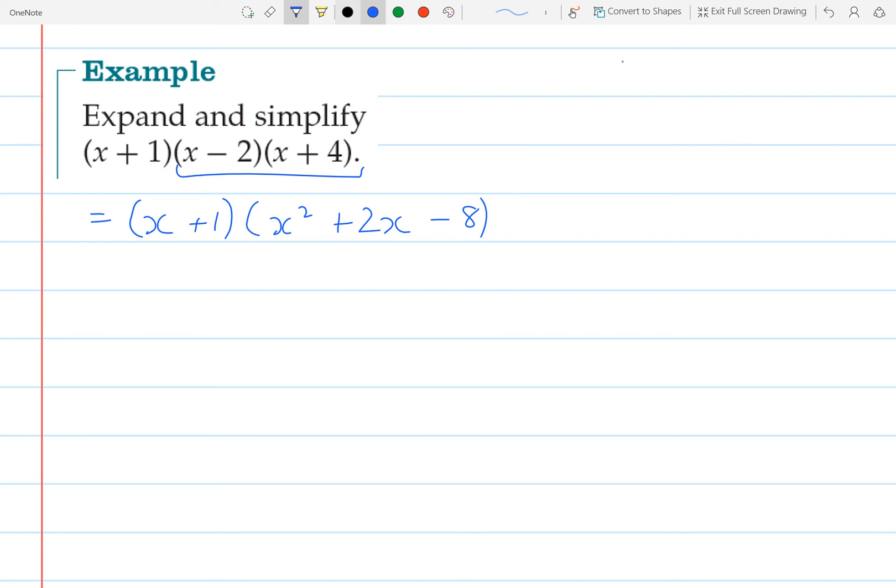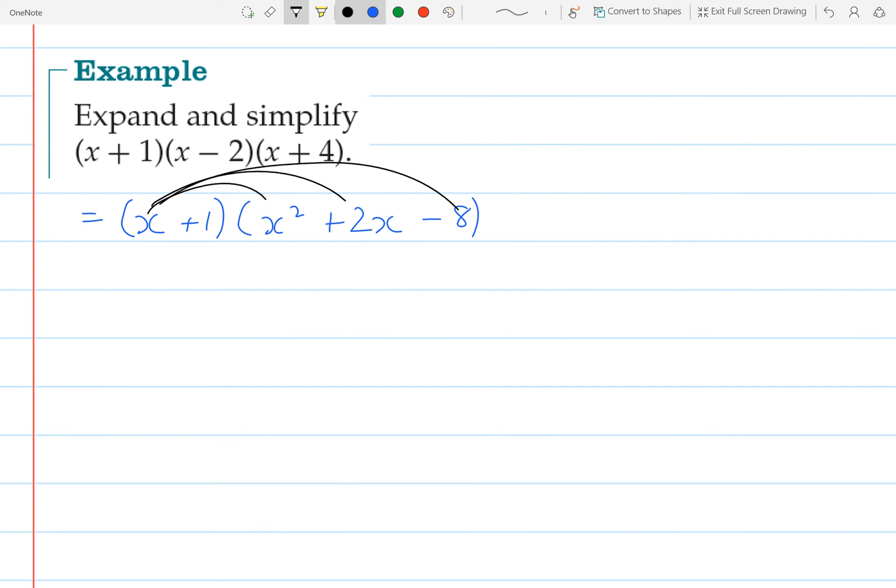Now like I said, I expect you to be going from here to here in one step. Okay, now when we expand our next set of brackets, we're going to go through and times everything by x. And so that will give me x cubed plus 2x squared minus 8x.